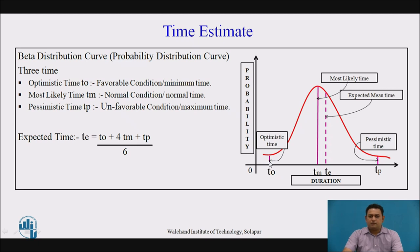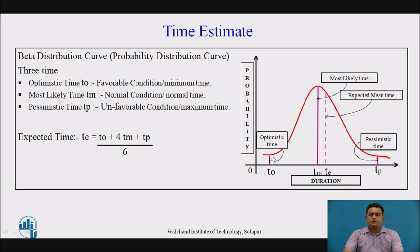On the beta distribution curve, the pessimistic time, most likely time, and pessimistic time of the particular activity are represented. When we observe this curve, the most likely time is closer to the expected mean time. This beta distribution curve is used to define the three time estimates of each activity.